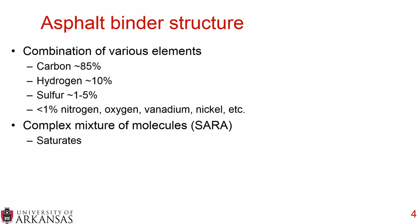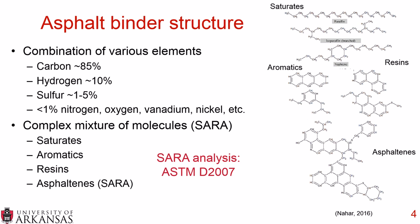Another way to look at asphalt binder is on a molecular scale. A very common test is the SARA analysis — S-A-R-A — which stands for saturates, aromatics, resins, and asphaltenes. You take an asphalt binder sample and separate it: saturates are large carbon chains; aromatics and resins are various carbon rings and structures; and asphaltenes are by far the heaviest and most complicated molecules. More information can be found in ASTM D2007.